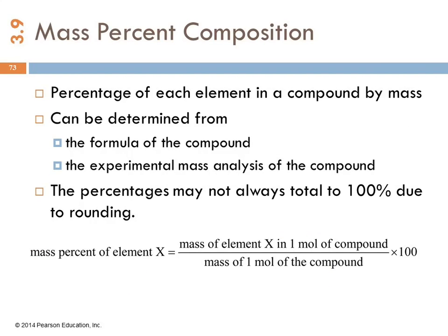So when we do mass percent composition, we identify the percentage of each element in that compound by mass. This can be figured out from the formula, or it can be figured out experimentally. You can take a compound and decompose it into its individual elements and weigh them. The percentages of each element would ideally add up to 100%, though not necessarily perfectly because there is some rounding involved.